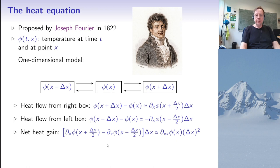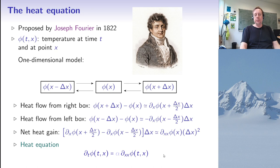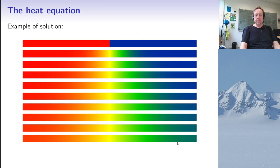I have a similar expression for the heat flow coming from the left box. There's a minus sign because if the temperature is increasing, heat will flow out of the middle box and into the left box. Adding these two terms gives the net heat gain, and the difference can be approximated by a second derivative. So this is the heat equation: the time variation of the temperature at time t and point x is proportional to the second spatial derivative of the temperature. Starting with an initial state hot on the left and cold on the right, the temperature distribution becomes smoother over time — that's one important property of the heat equation.